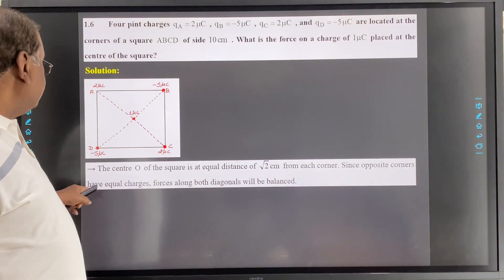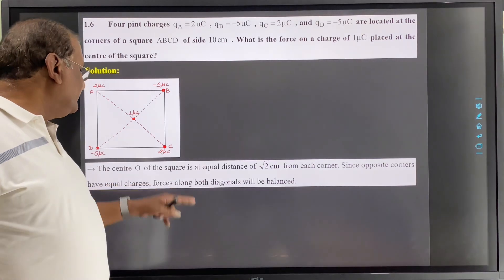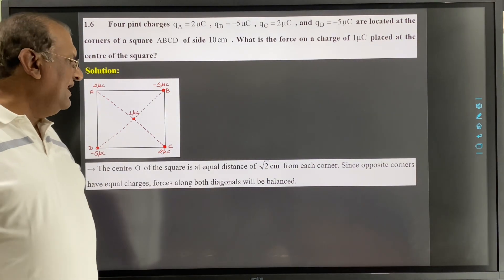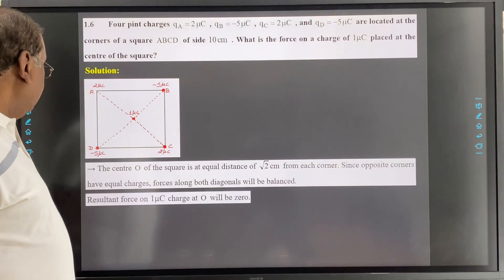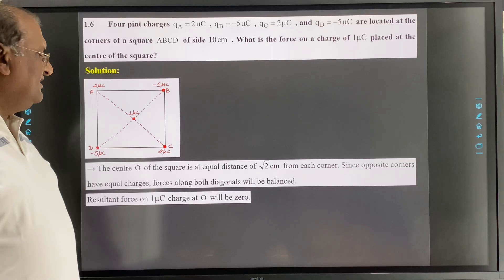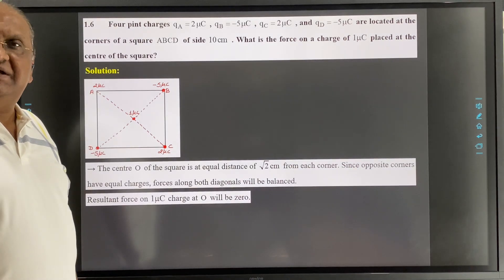Since opposite corners have equal charges, forces along both diagonals will be balanced. So resultant force on 1 micro coulomb charge at O will be zero.